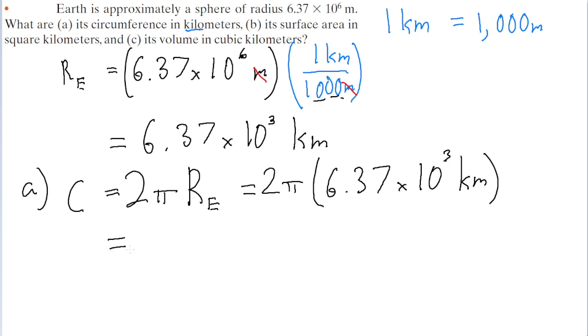If we put this into a calculator, then we find a circumference of about 4.00 times 10 to the power of 4 kilometers. And so that is our answer for part A, that is the circumference.